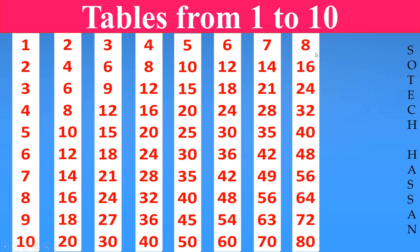8th table. 8 1s are 8. 8 2s are 16. 8 3s are 24. 8 4s are 32. 8 5s are 40.